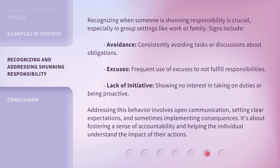Recognizing when someone is shunning responsibility is crucial, especially in group settings like work or family. Signs include: avoidance — consistently avoiding tasks or discussions about obligations; excuses — frequent use of excuses to not fulfill responsibilities; and lack of initiative — showing no interest in taking on duties or being proactive. Addressing this behavior involves open communication, setting clear expectations, and sometimes implementing consequences. It's about fostering a sense of accountability and helping the individual understand the impact of their actions.